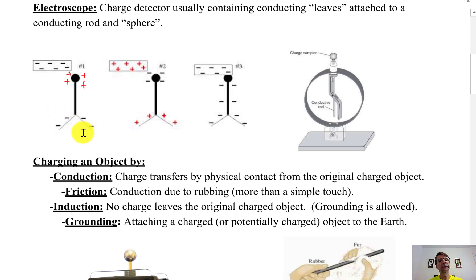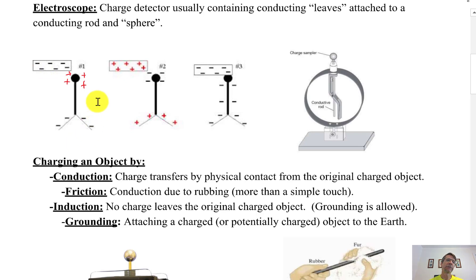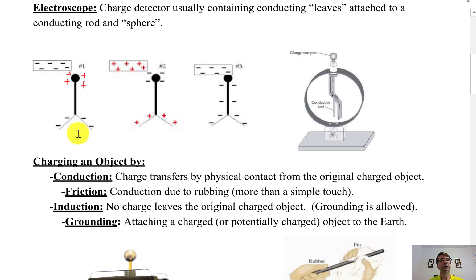Since there are extra electrons in those leaves and they're free to pivot, they push against each other because like charges repel and they spread apart. If you remove the rod, the leaves collapse and go back down. Right now this electroscope is not charged yet — it has a polarization of charge. The net charge on this electroscope is zero because no charge has been transferred to it yet.